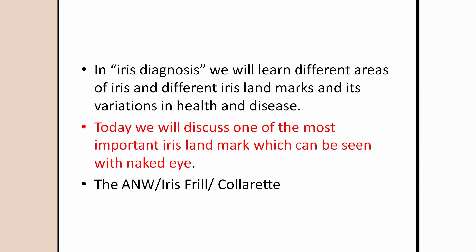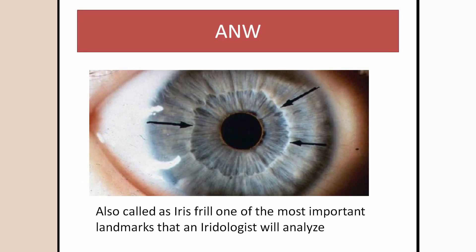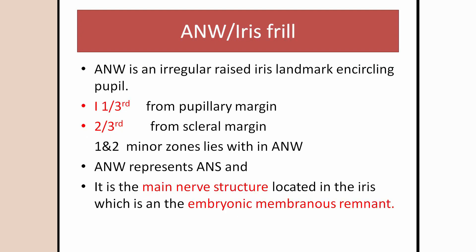In iris diagnosis, we learn different iris landmarks and their variations in health and disease. Today we are going to study one of the major iris landmarks called the Autonomic Nerve Wreath, which can be observed with the naked eye. It is also known as the iris frill because it resembles the frill of a cloth, and it is also called the collarette. This is the picture of an autonomic nerve wreath — as the arrows indicate, you can see the autonomic nerve wreath, also called the iris frill, which is an important landmark that an iridologist will analyze.